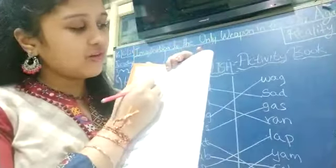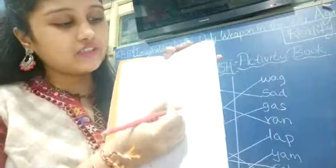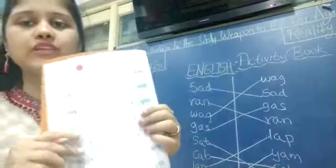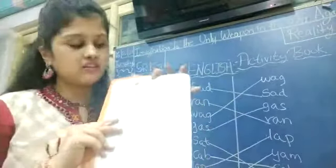So now we will do it together. What is given over here? S-A-D sad. So you have to match S-A-D sad. Now ran. R-A-N ran. Where is ran over here? R-A-N ran. Now wag. W-A-G wag. W-A-G wag.